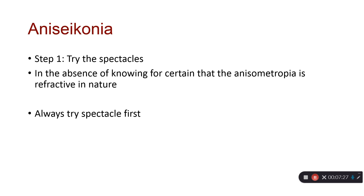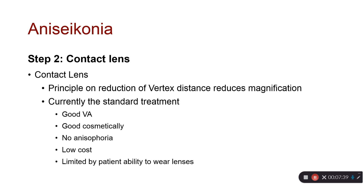The first step is always to try spectacles. In the absence of certainty about whether the anisometropia is refractive or axial, always try spectacles first. If the patient still has symptoms and can't tolerate glasses, the next step is contact lenses. Contact lenses reduce vertex distance, thereby reducing magnification changes. They are the most common treatment after spectacles, offer good visual acuity, good cosmetics, low cost, and are limited mainly by the patient's ability to wear them — which is a challenge for older patients.